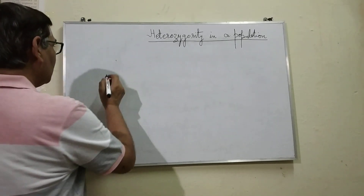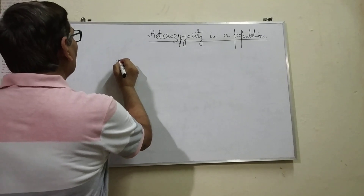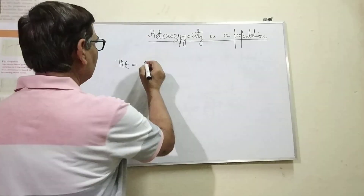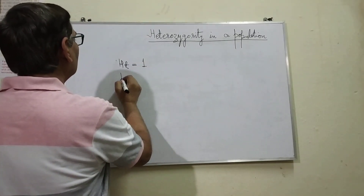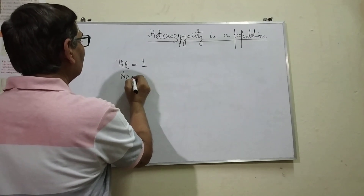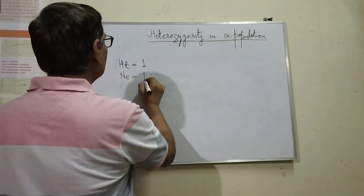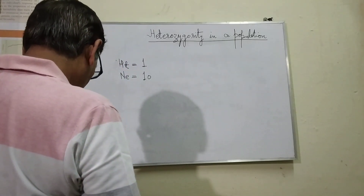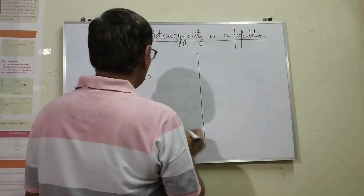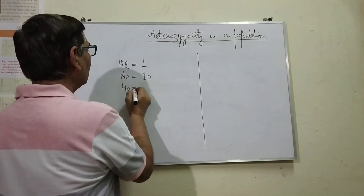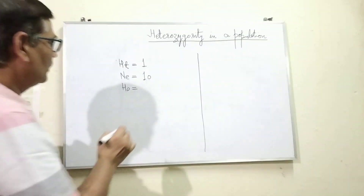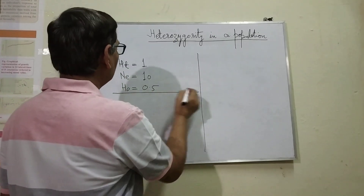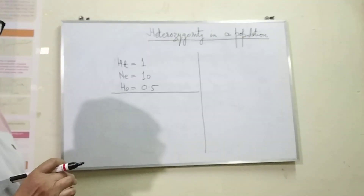Let us consider a particular case in which we want to see heterozygotes in the next generation — in generation 1. Here, Ne, that is effective population size, is 10. Ten individuals are there which make the effective population size. We can consider that the initial heterozygosity Ho is 0.5. This is one case we are going to take.